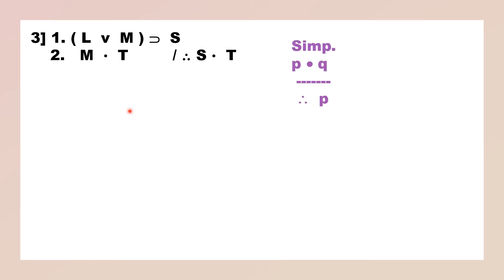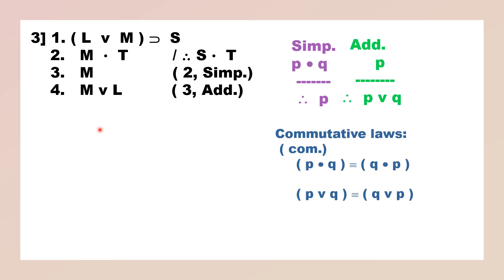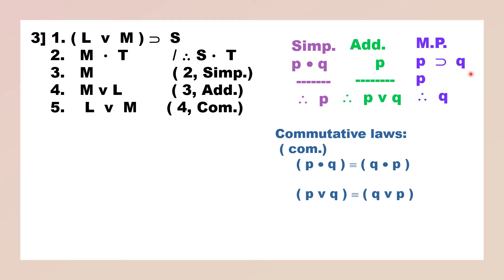Now we come to the next example. Here we want M, so we will simplify M. Then for S — how do you get S? Only if you have L wedge M. So having M, we add L by the rule of addition. Now M wedge L has to be interchanged because we must get L wedge M, not M wedge L. So we interchange by commutative law and get L wedge M. Now the antecedents are the same, so we can derive the consequent S by modus ponens: L wedge M implies S; L wedge M; therefore S.